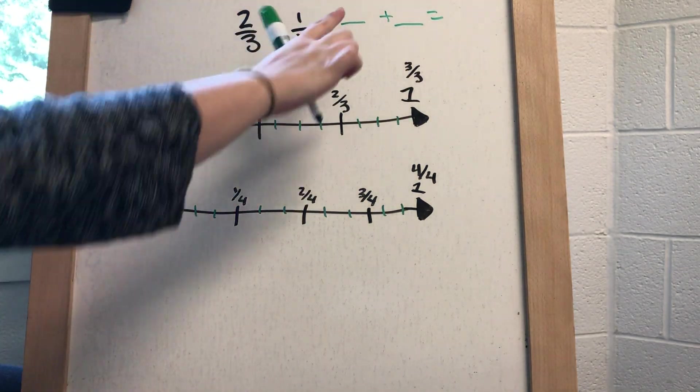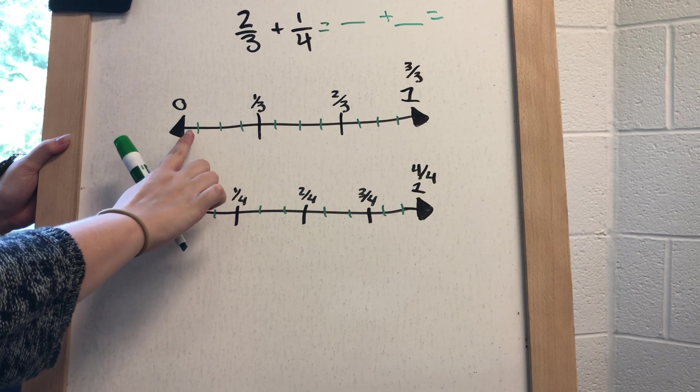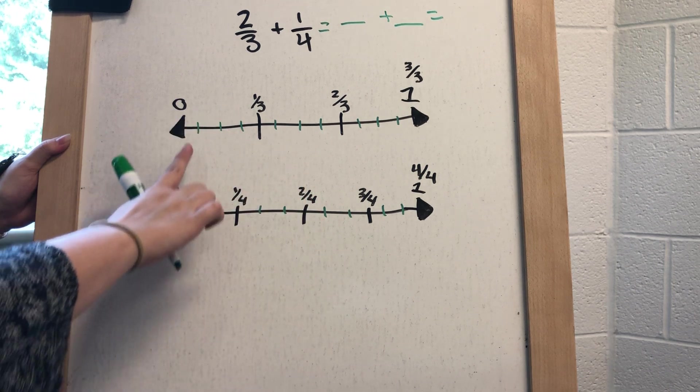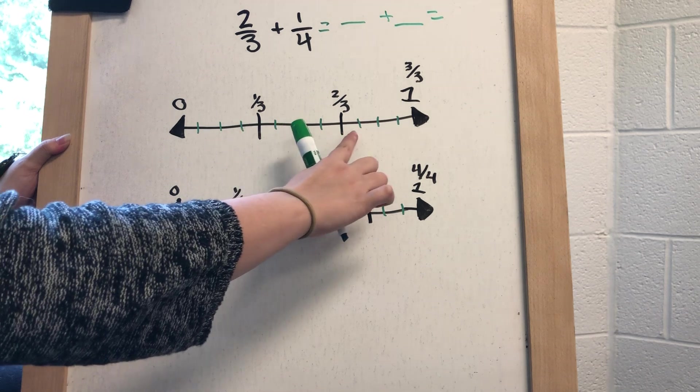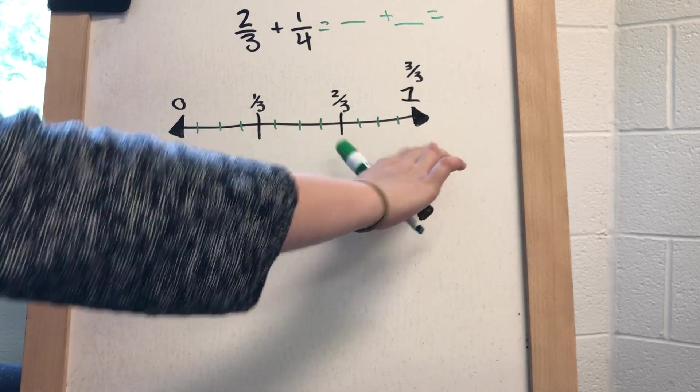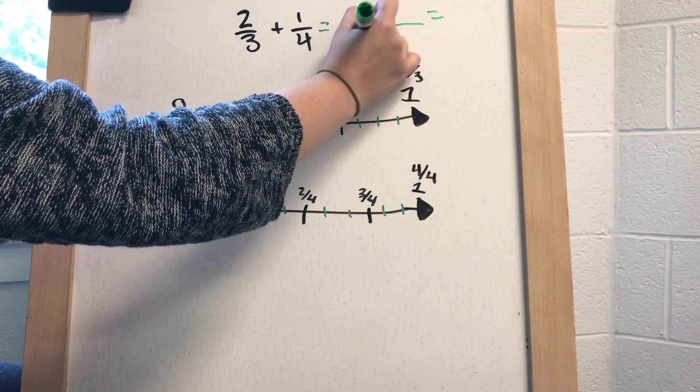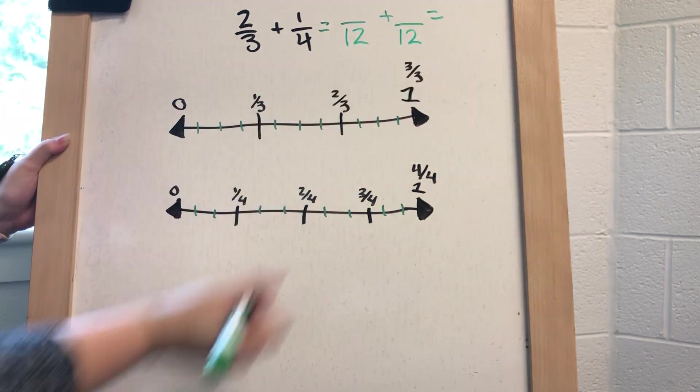Okay, so we're going to change our fractions. If we look at this and we count, I now have on each of my number lines 1, 2, 3, 4, 5, 6, 7, 8, 9, 10, 11, 12 sections of my number line. So my new denominator is going to be 12.